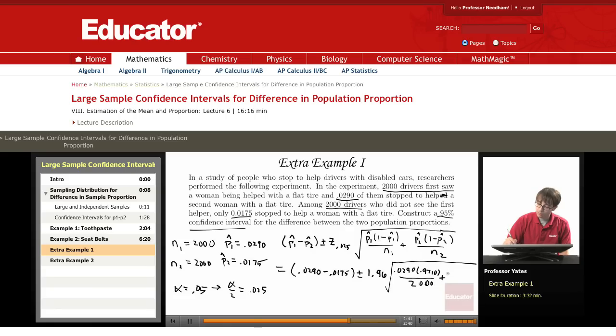And then here I have 0.0175 times 0.9825 and that's divided by 2,000.